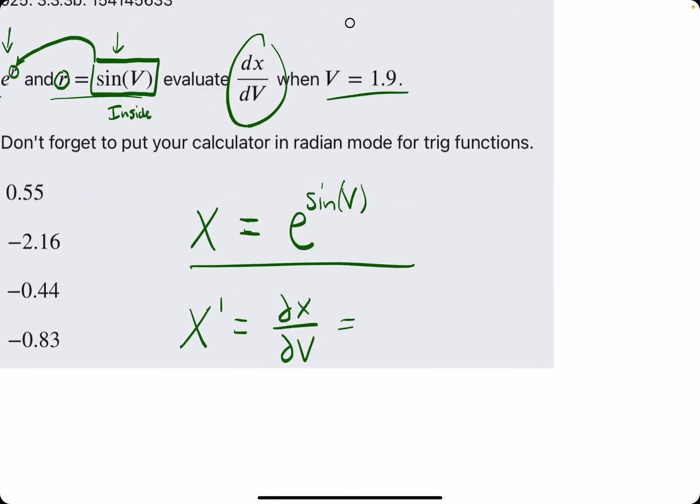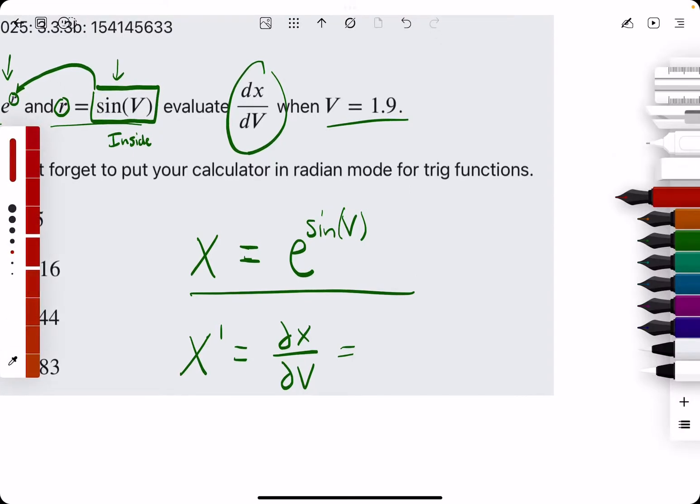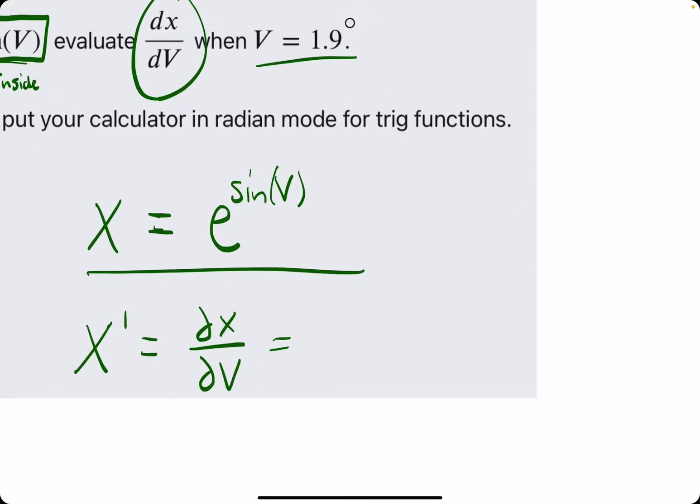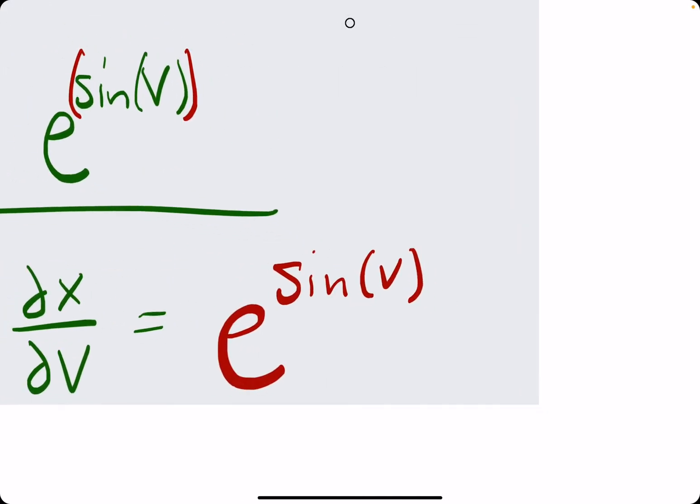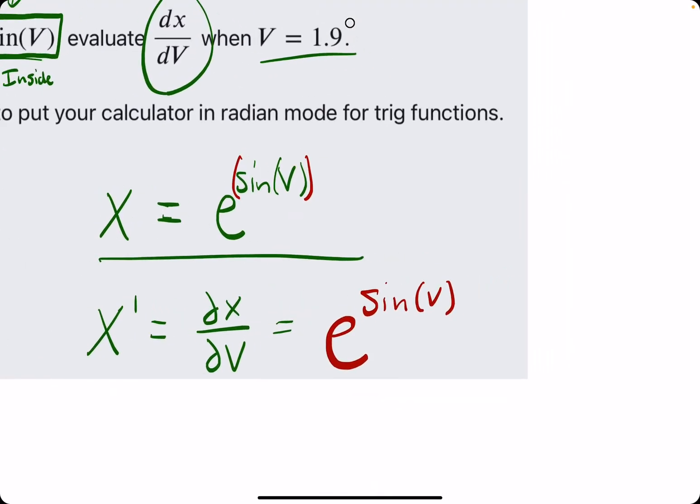Let's start with the outside layer. The outside layer is e to the something. The derivative of e to the something is e to that same something. That's a nice trick. Whenever you see e raised to some exponent, you should see that same exact e term in your derivative. That's the first part.